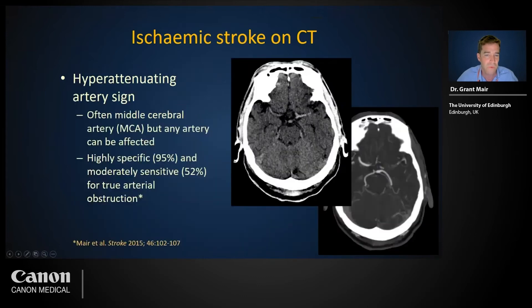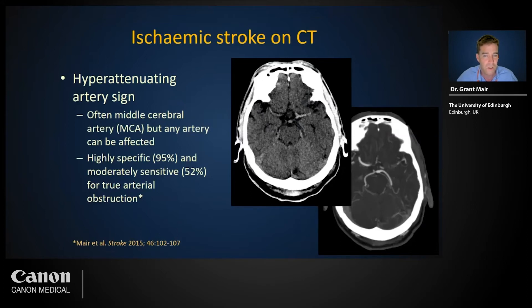The hyper-attenuating or hyperdense artery sign is a highly specific and moderately sensitive marker of arterial obstruction. If present, it is visible soon after onset and is more reliably identified than subtle brain changes. High specificity means that if the sign is present, we can be confident there is a true arterial obstruction, as demonstrated here with concurrent angiography.